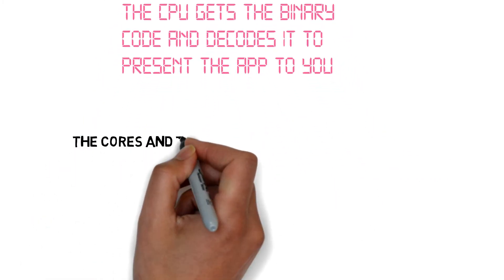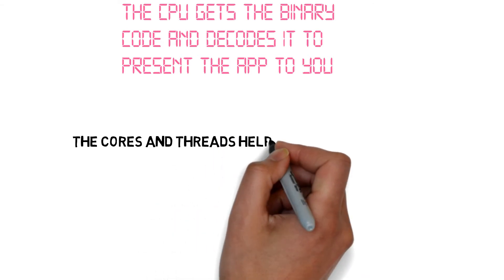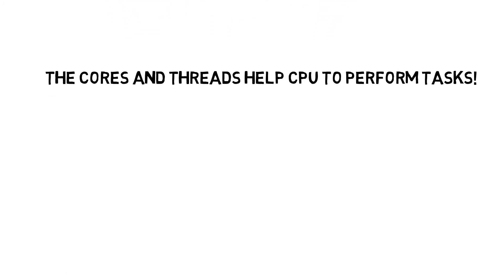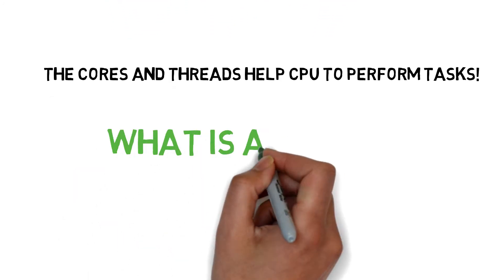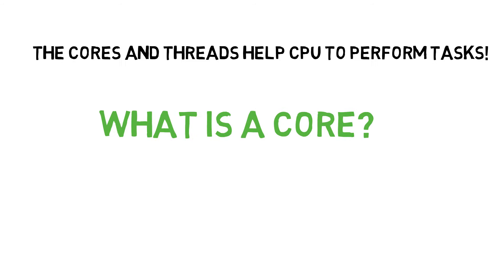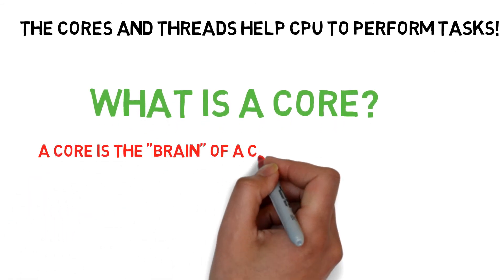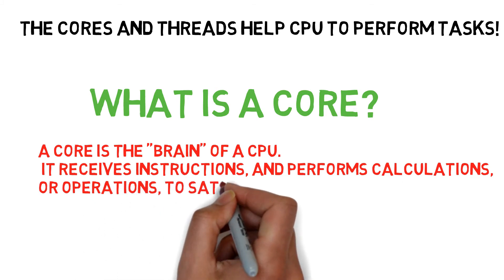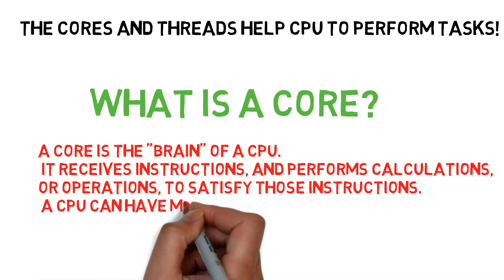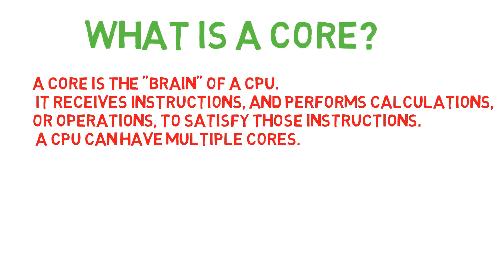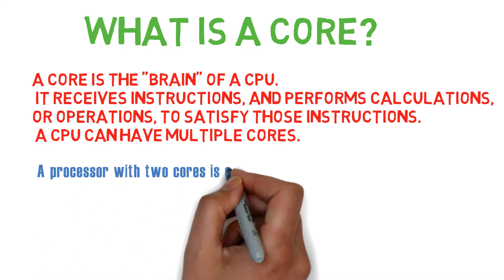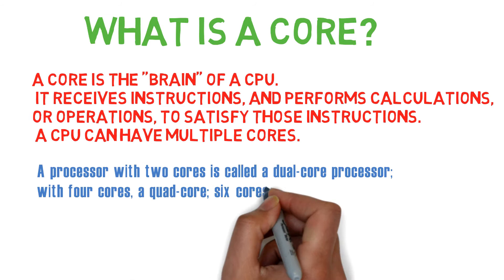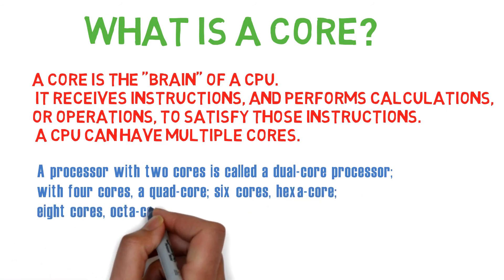Cores and threads help the CPU to perform tasks. The core is the brain of a CPU — it receives instructions and performs calculations or operations to satisfy those instructions. The CPU can have multiple cores. A processor with two cores is called dual core, with four cores is called quad core, and with six cores is called hexa core.